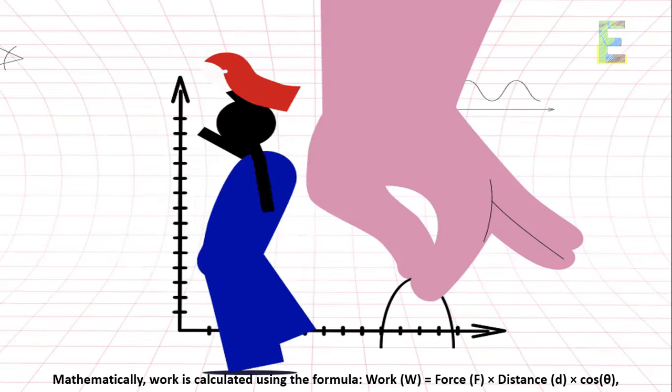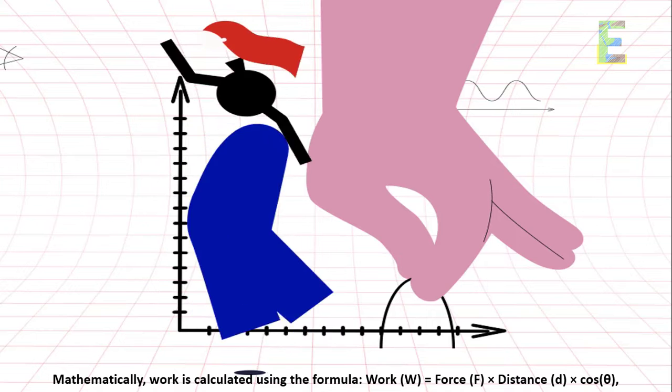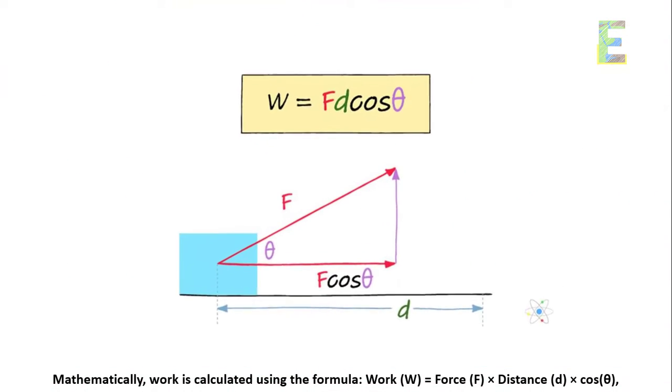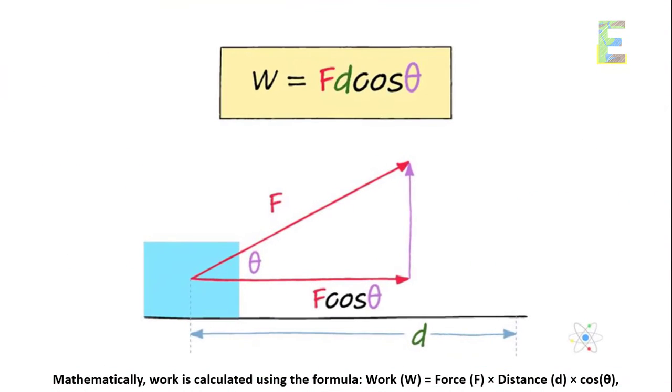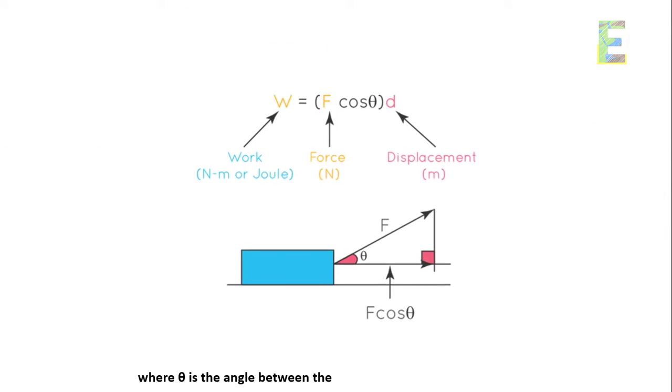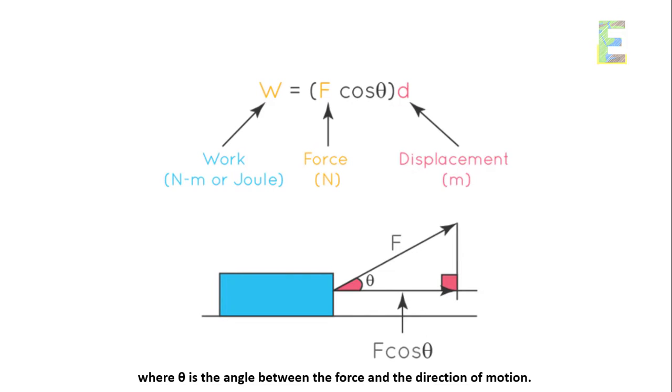Work equation. Mathematically, work is calculated using the formula: work W equals force F times distance D times cos theta, where theta is the angle between the force and the direction of motion.